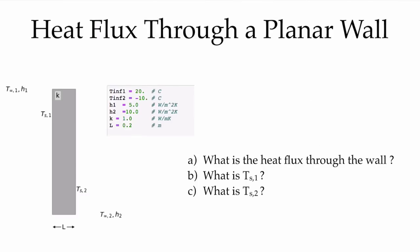So the first problem - heat flux through a planar wall. We have the planar wall that we've seen before. It has a dimension of L. We are exposing it on one side to an ambient temperature T∞1 with a convection coefficient H1, and likewise an ambient temperature T∞2 with a convection coefficient H2 on the other side of the wall at X equals L. The temperature on the left side is 20°C, the temperature on the right side is -10°C. I've specified convection coefficients of 5 W/m²·K on the hot side - perhaps indicative of natural convection - and a slightly larger coefficient on the outside due to a light wind. We'll give the wall a thermal conductivity of 1 W/m·K and a thickness of 20 centimeters.